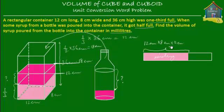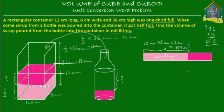That is equal to: 12 times 8 is 96, and 96 times 12 — 12 times 6 is 72, carry 7; 12 times 9 is 108, plus 7 is 115 — so its volume is equal to 1152 cm³. Now next, there was some syrup that was poured from the bottle into the container, and that is what we have to find out.